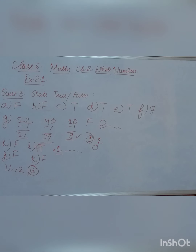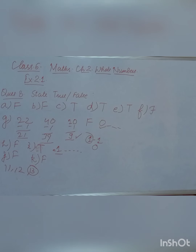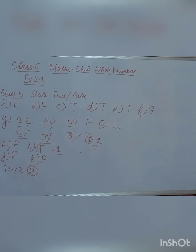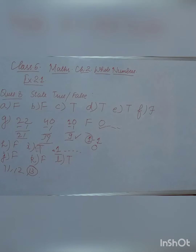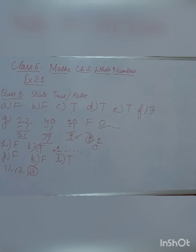Now for the L part: 'The whole number 0 has no predecessor.' Yes, this is true. Whole numbers start from 0, so there is no whole number before 0. Therefore, whole number 0 has no predecessor — this statement is true.